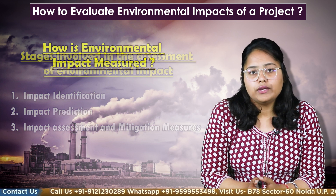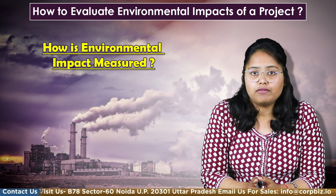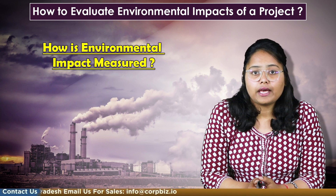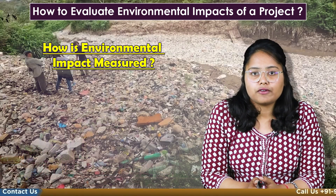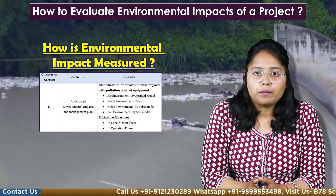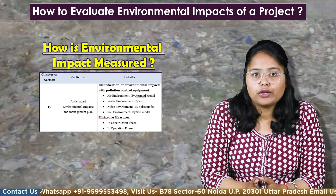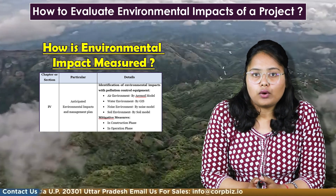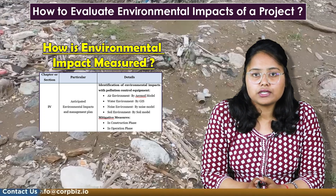Now the crucial question: how can we measure the environmental impacts? As per a recent report, more than 100 countries have legislation that requires an Environmental Impact Assessment to be carried out for any project that may highly impact the ecosystem. It was designed to evaluate such effects according to sustainable development indicators. Chapter 4 — Anticipated Environmental Impacts and Management Plan — includes identification of environmental impacts with pollution control equipment such as Air Environment by Air Model, Water Environment by GIS, Noise Environment by Noise Model, and Soil Environment by Soil Model. It also includes mitigative measures in the construction and operation phase.